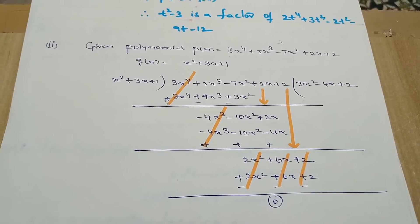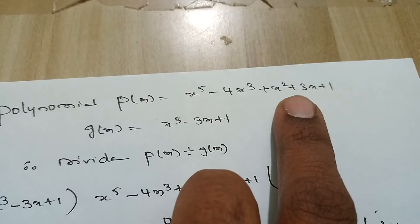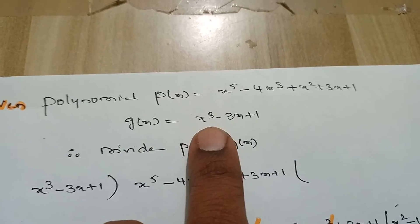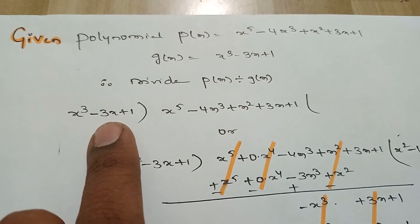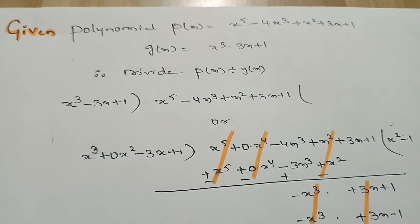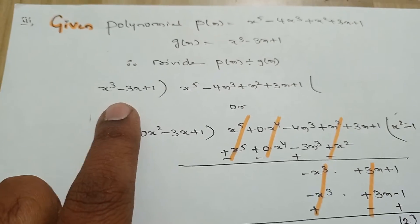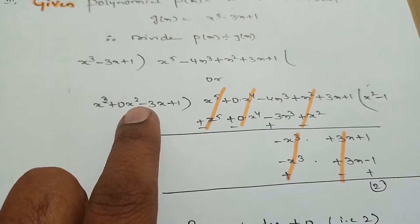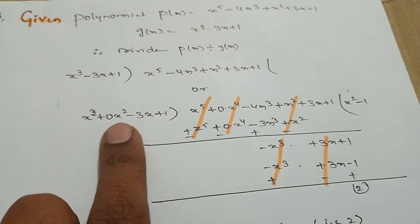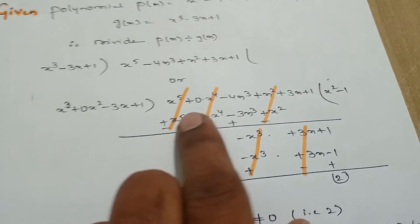Now for the third sum: the given polynomial is p(x) = x⁵ - 4x³ + x² + 3x + 1, and g(x) = x³ - 3x + 1. We have to divide p(x) by g(x). Before that we should see if the given polynomial is in standard form. For g(x), the powers are not in decreasing order, so it is not in standard form. Converting into standard form by inserting x² with zero coefficient: g(x) = x³ + 0x² - 3x + 1. This is now in standard form.